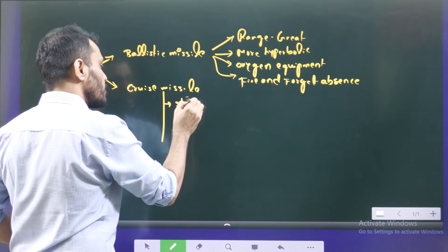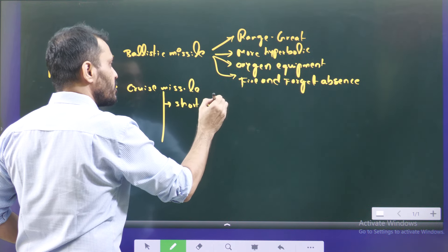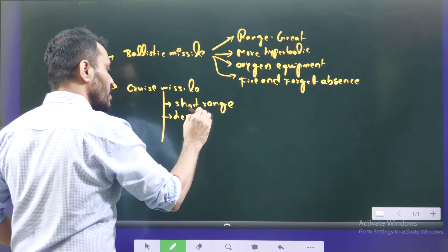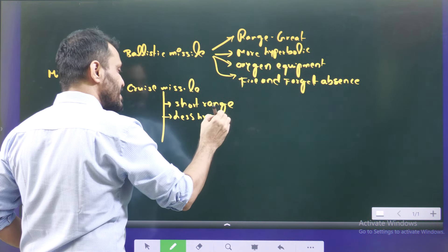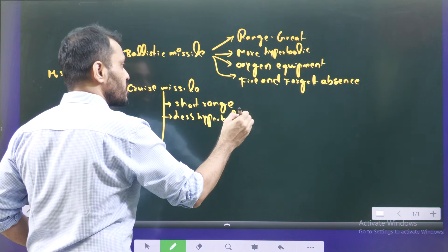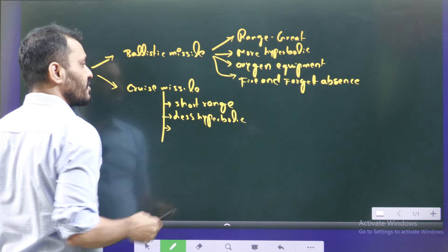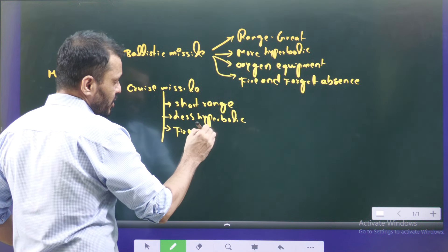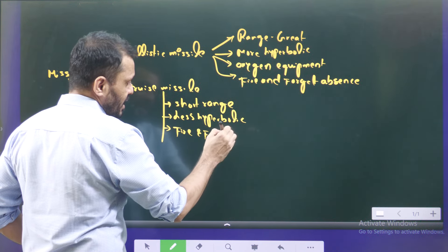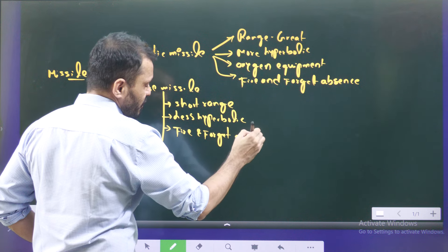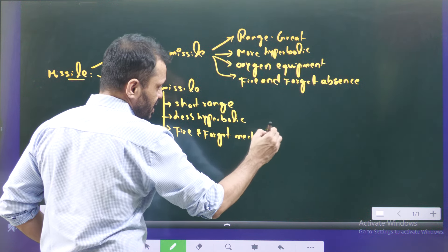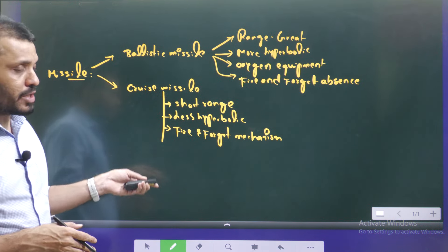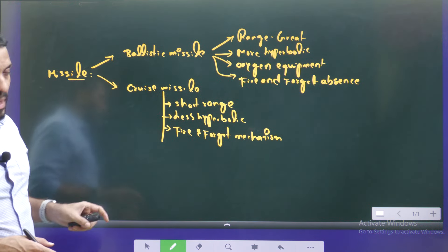Cruise missiles, on the other hand, are shorter range and less hyperbolic in nature because their path depends on their target. They do not require special oxygen equipment. They function with the fire and forget mechanism — once we fix the target and launch the missile, it will maneuver and change its direction according to its target.